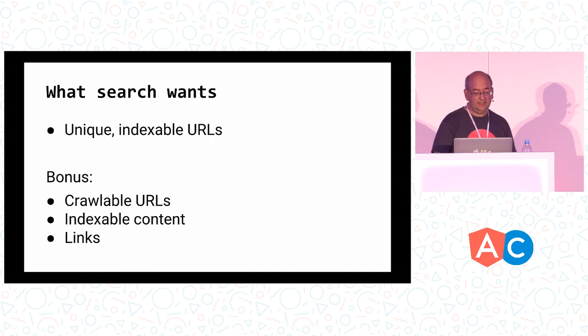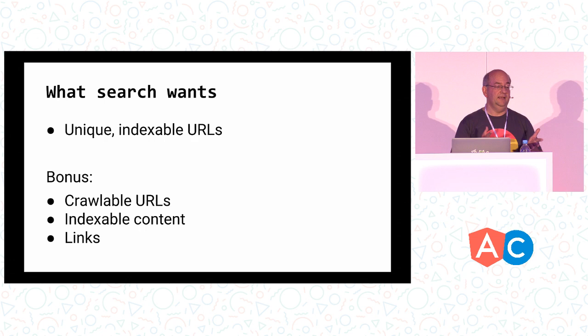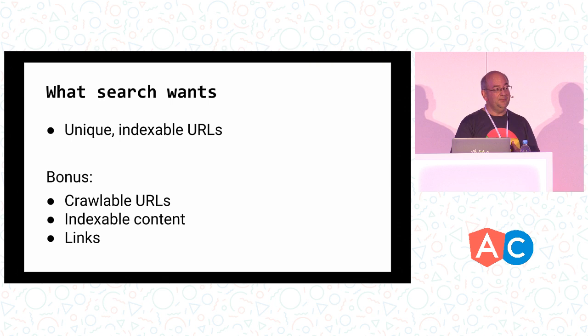Search starts with URLs — that's the most important thing for us. We really need unique, indexable URLs for each piece of content. SEOs always say you need to put this or that on your page, but from our point of view, URLs are the most important part. Sometimes we can't even crawl the URLs but can still show them in search — so it's almost a bonus to crawl the URLs and find indexable content.